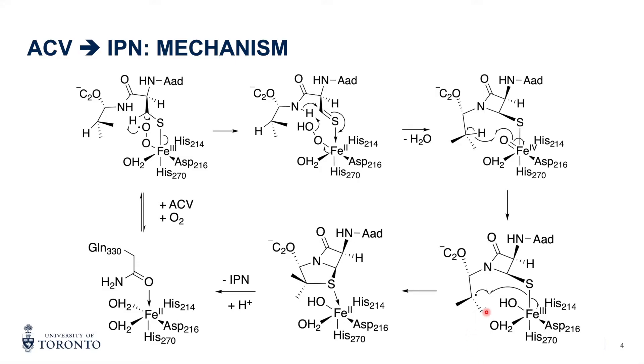And finally, the radical closes onto the cysteine sulfur, forming a five-membered thiazolidine ring. The isopenicillin product is then released to close the catalytic cycle.